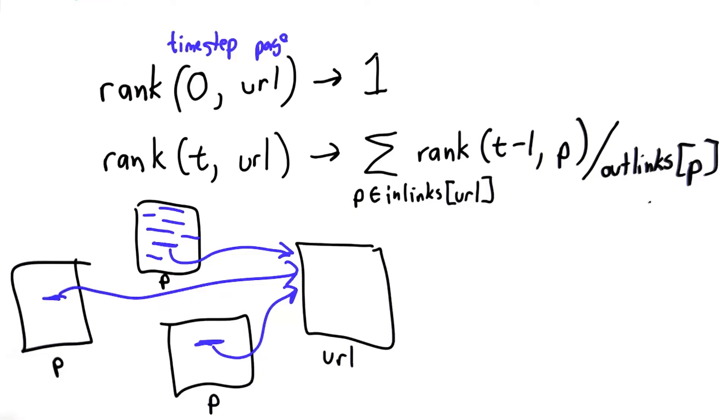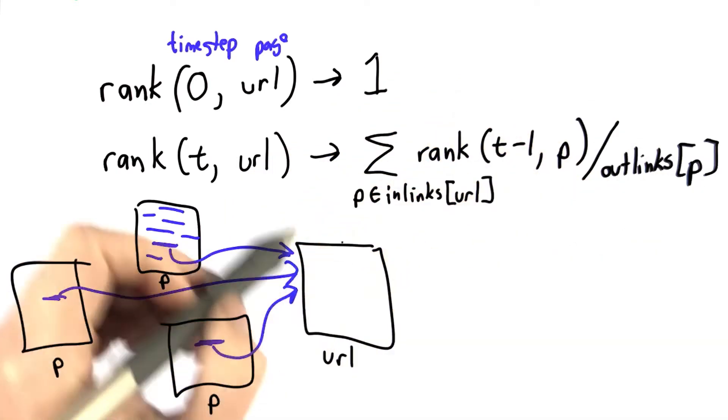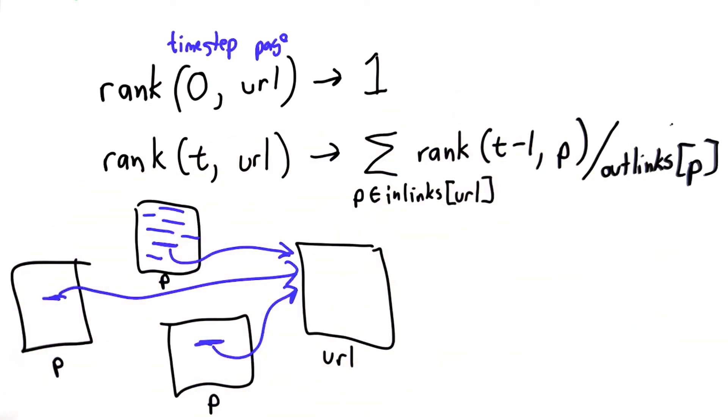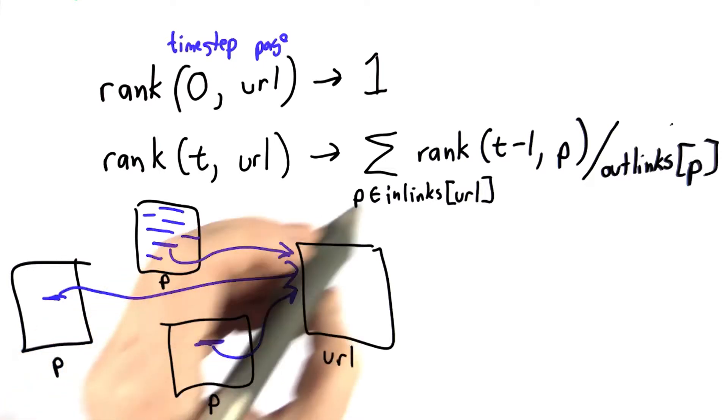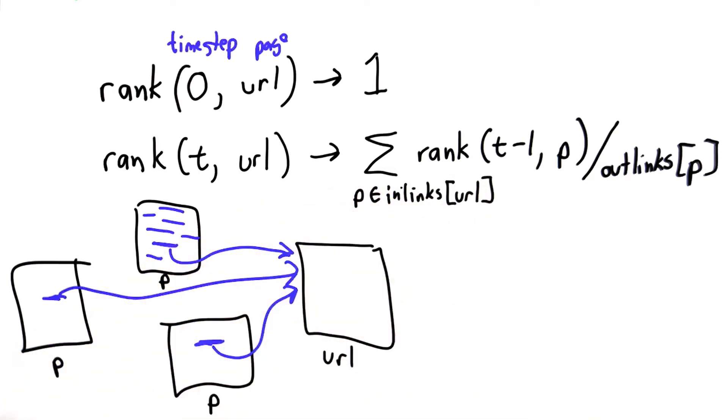So the final change we're going to make is thinking about our random surfer model. If a page has no incoming links, its popularity ranking would be zero. We don't want that to be the case.